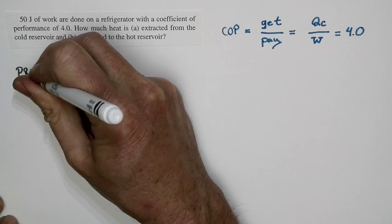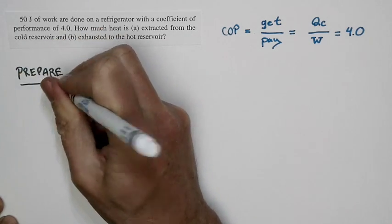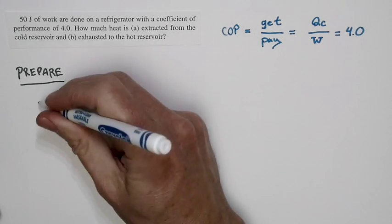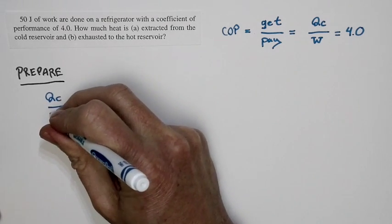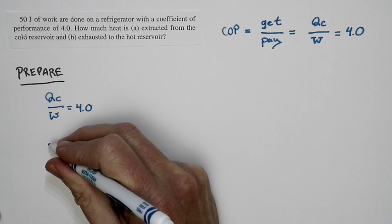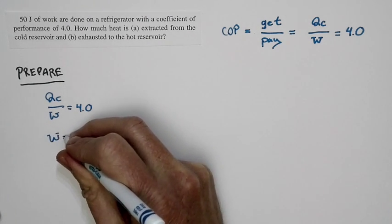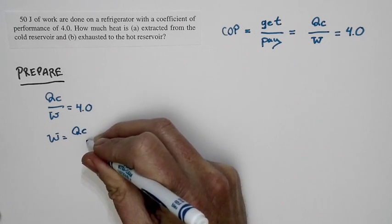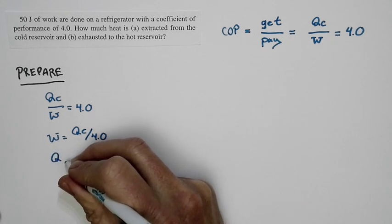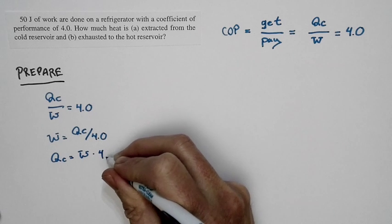Now, for a prepare step, here's what we're going to do. We've defined the coefficient of performance. That's QC over W. So, I'm going to rewrite it this way. QC over W is equal to 4.0. So, that tells me that W is equal to QC over 4.0. Or, I can also write it this way, that QC is equal to W times 4.0.